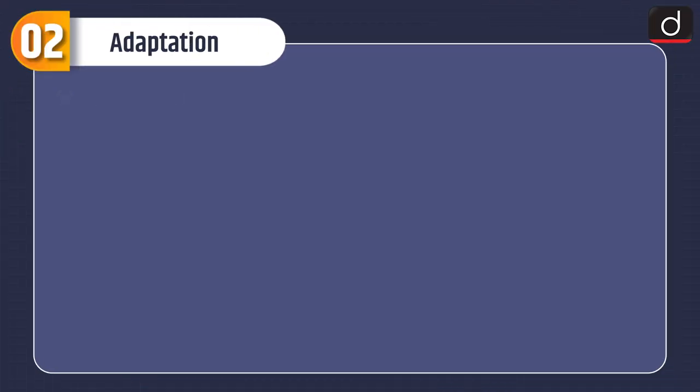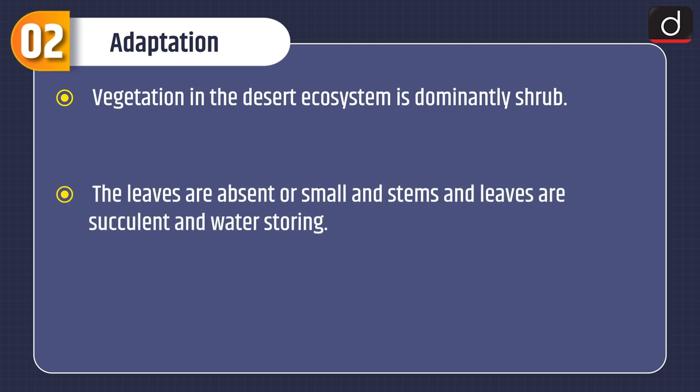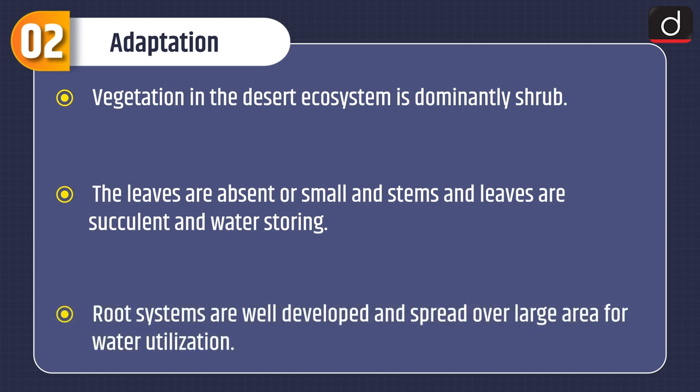Now let's discuss about Adaptation. Vegetation in the desert ecosystem is dominantly shrub. The leaves are absent or small, and stems and leaves are succulent and water-storing. Root systems are well developed and spread over a large area for water utilization.